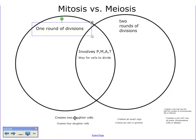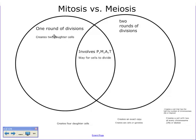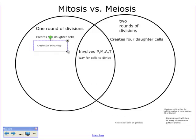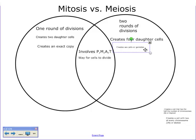Another difference is that at the end of mitosis we create two daughter cells. You start with one cell — say a skin cell — and end up with two identical skin cells. Whereas in meiosis we create four cells instead of two. In mitosis we create an exact copy, but in meiosis we don't create exact copies — we create sex cells, otherwise known as gametes: sperm or egg.